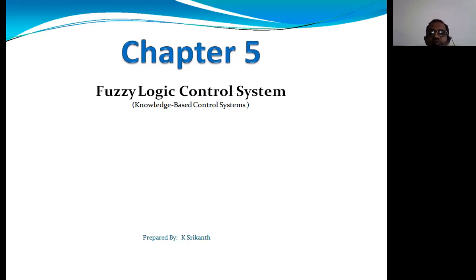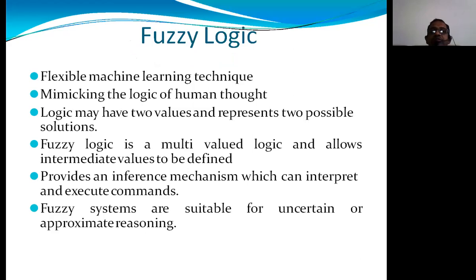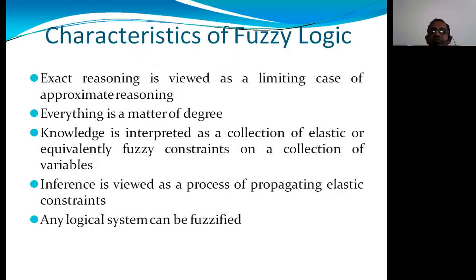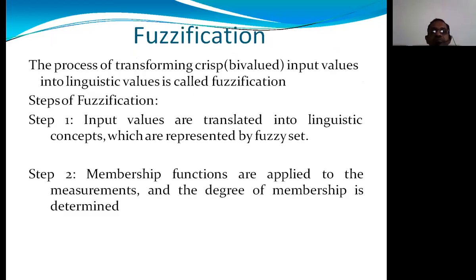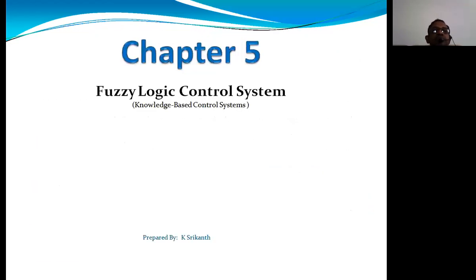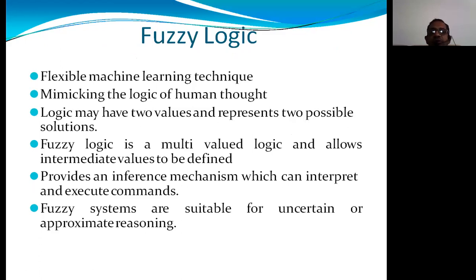In chapter one, we covered fuzzy sets and basics of fuzzy set representation. In unit two, we covered operations on fuzzy sets. In unit three, we covered various membership functions of fuzzy logic and fuzzification. In unit four, we covered defuzzification methods. Let us have a quick review of all those topics before entering unit five on control systems.